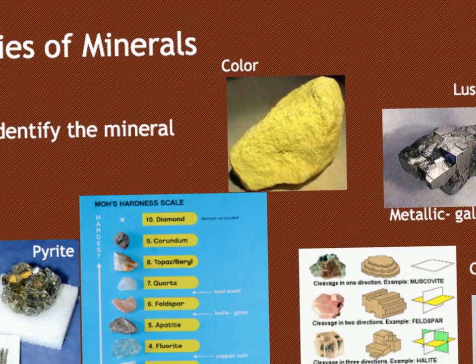One of the more obvious choices is color. Color helps us determine sulfur really easily because sulfur is really yellow. Sulfur also has that special property of smell — it smells like rotten eggs.